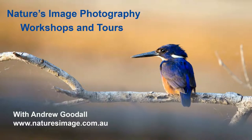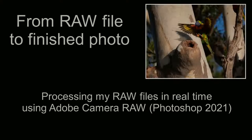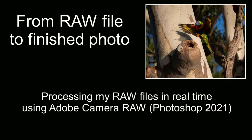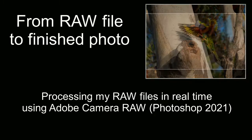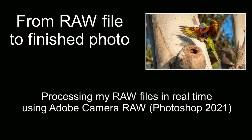G'day friends, it's Andrew Goodall here again from Nature's Image Photography with the latest in a new series of videos looking at my editing process from the original raw file to the finished photo in Adobe Camera Raw. This time the subject is this rainbow lorikeet coming in to land on the tree it calls home. But before we get started, I'll invite you to hit that subscribe button if you haven't already, to keep in touch with everything from my world of photography.